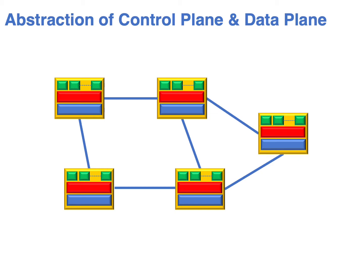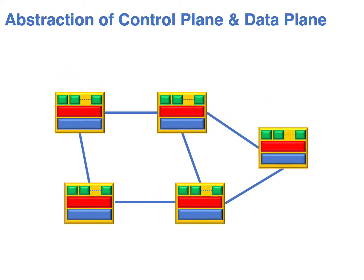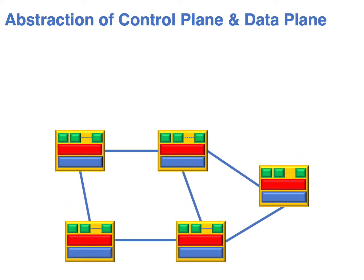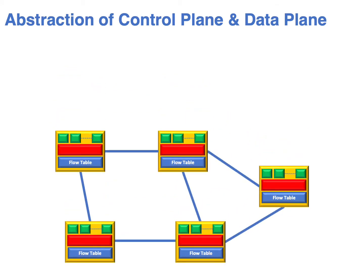That is, separating out the control plane from the data plane within the network. In the past, we've been used to autonomous systems where each switch-router makes the decision solely based on local logic on how to forward packets. With Software Defined Networking, things are going to change and we're going to go back to a more centralized model.